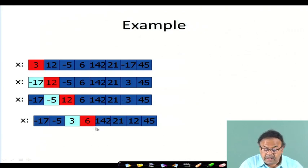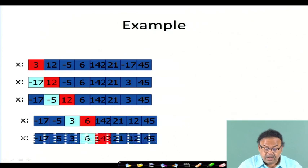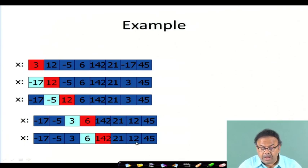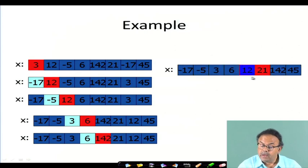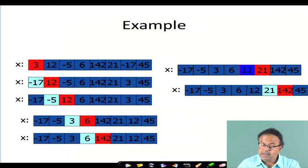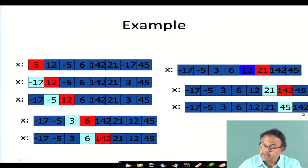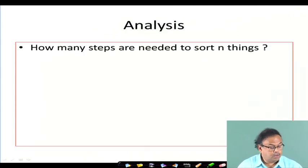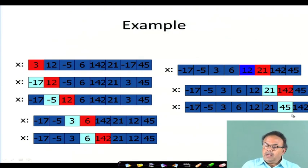Starting from 6, it is the minimum so it remains. k is incremented. From 142, 12 is the minimum so 12 and 142 are swapped. Next, from 21, 142, 45 — 21 is the minimum so it stays. Then 45 is the minimum so 45 and 142 are swapped. 142 is left at the end. That is the sorted array — this is selection sort.